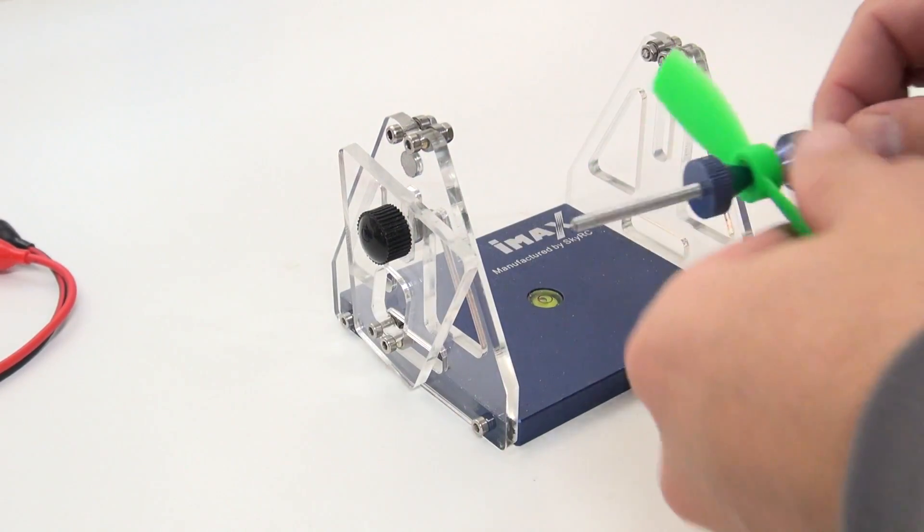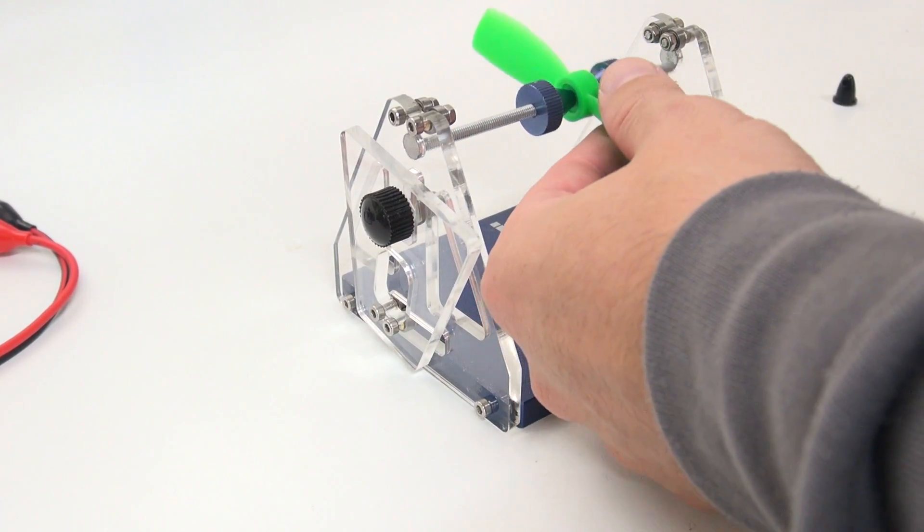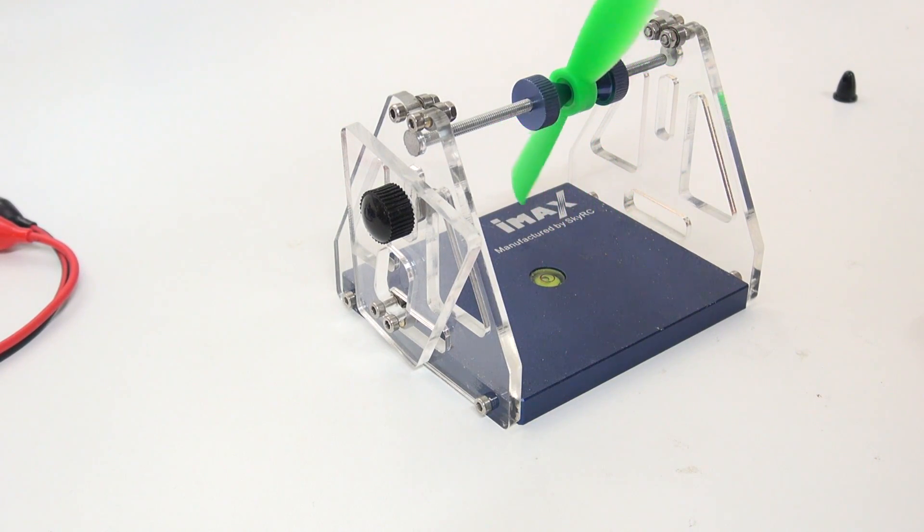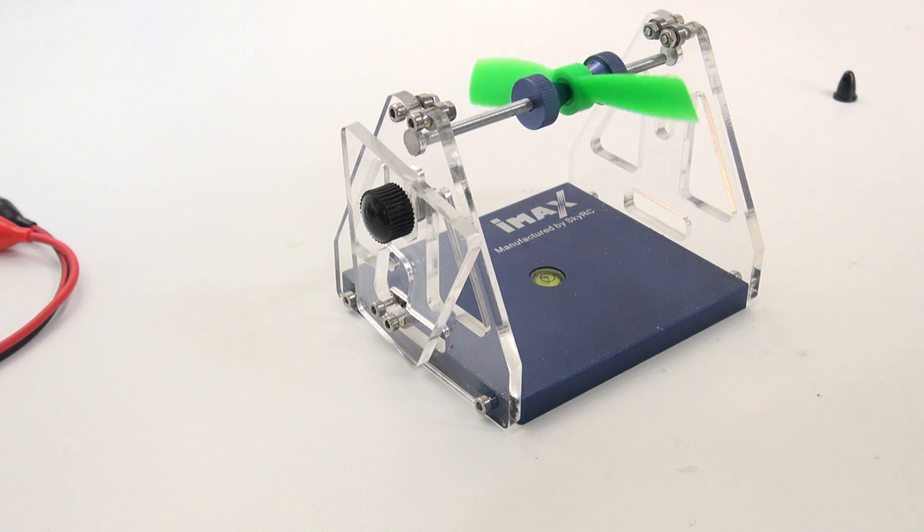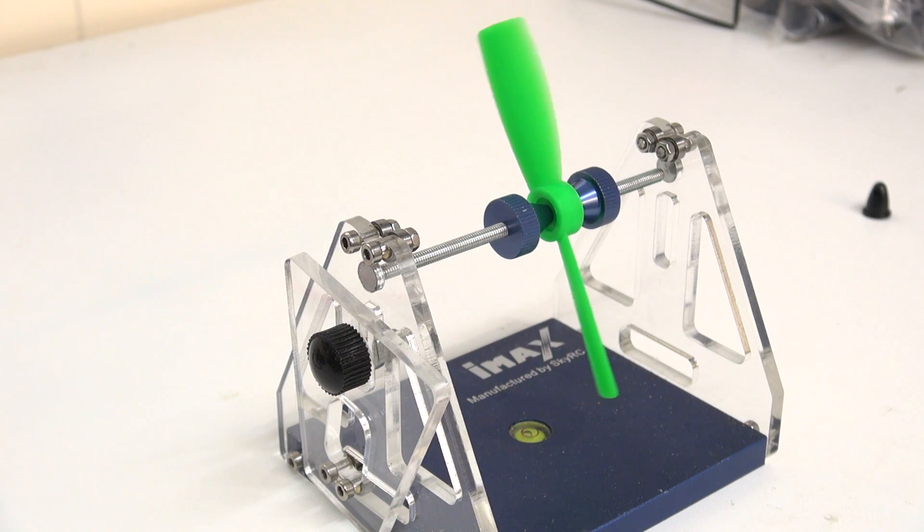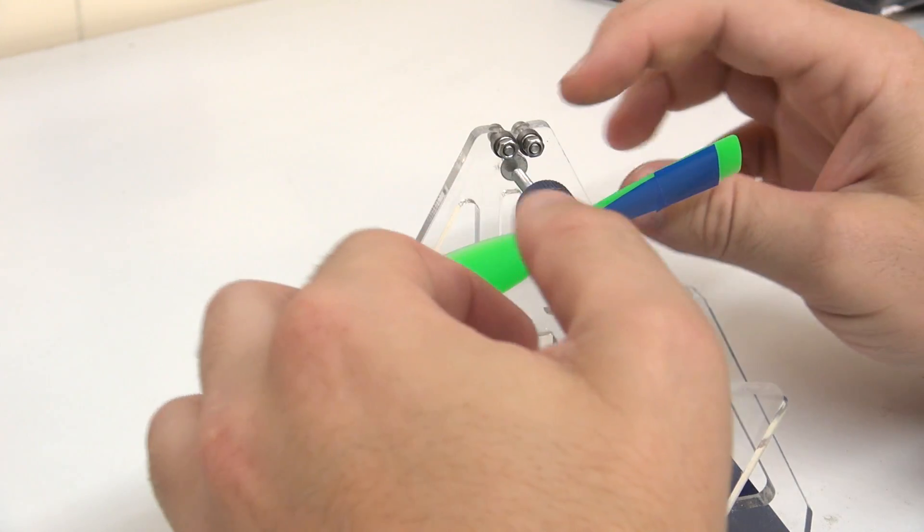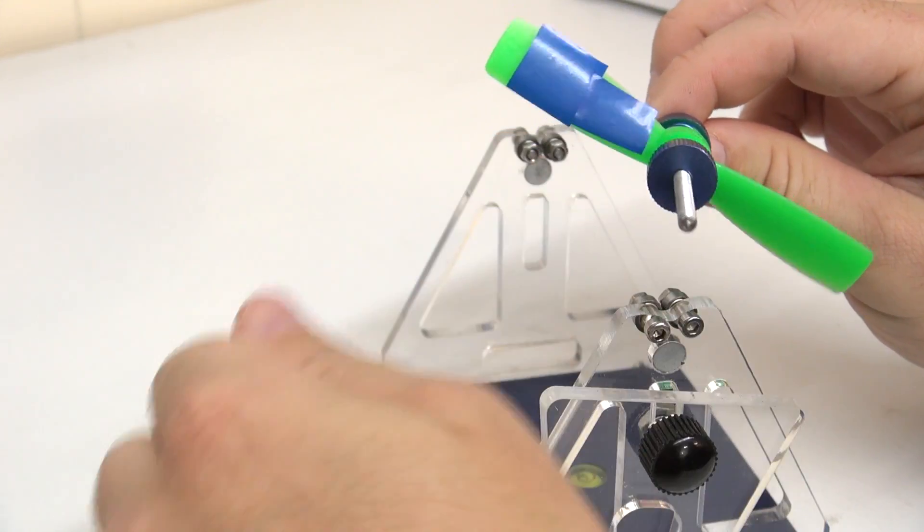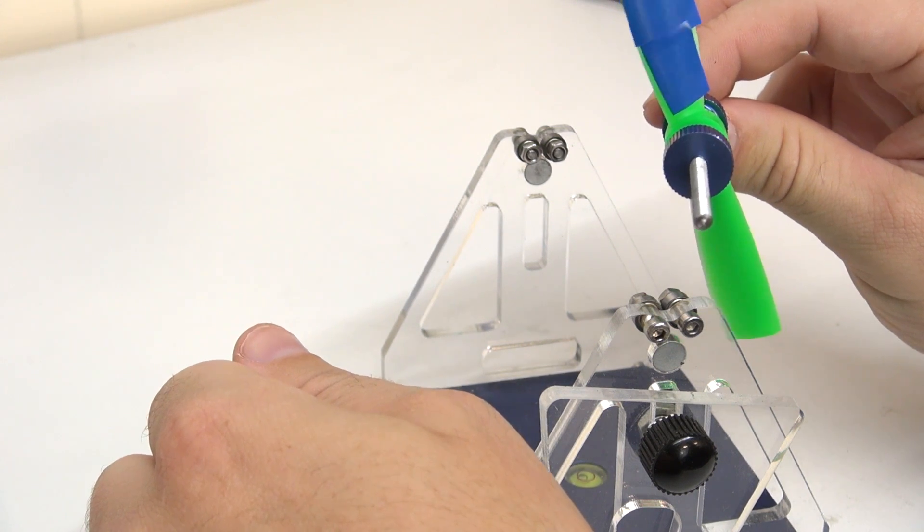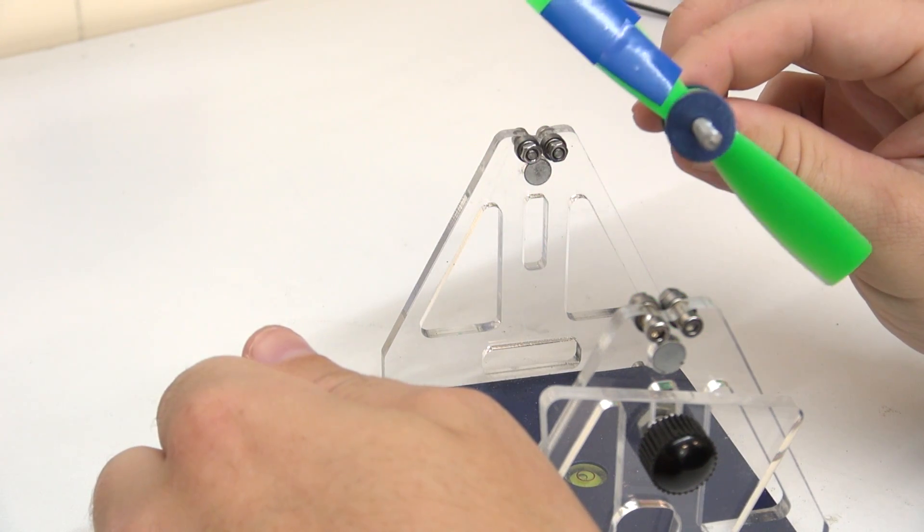So we've got our prop here. Let's see how well balanced she is. Well, obviously not very well balanced. Let's see if we can balance this out and see if the vibrations are much better when we put it back on the test stand. So we're looking about right there. But this is ridiculous. Most of the area here is covered in tape. And to be honest, I still think it needs a slightly bit more.